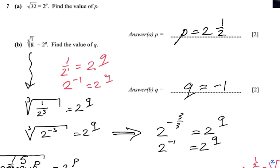Since 2 to the power minus 1 is the same as 1 over 2 to the power 1, we have 2 to the power minus 1 equals 2 to the power q, so q equals minus 1 — the same answer as before, but this time using the calculator approach without needing to rewrite from scratch.